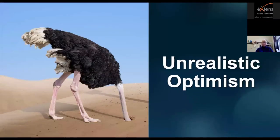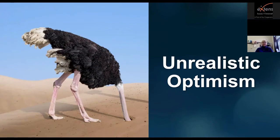The next is unrealistic optimism — quite simply, we don't think bad things are going to happen to us. I heard this a lot after Sandy. When I interviewed folks about why they didn't evacuate, the universal response was, 'I didn't think it would be that bad,' or 'We don't get hurricane storm surges here in New Jersey — they get them in Alabama or Florida.' Even though they had been warned and given all that information, they just didn't take the appropriate action because they didn't think it would happen to them.